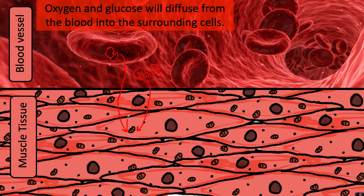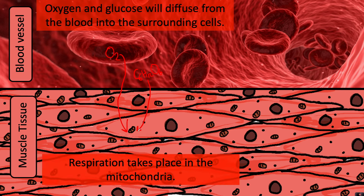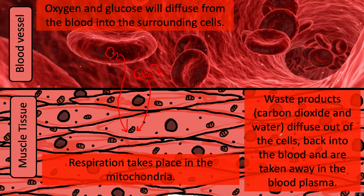The oxygen and glucose are directed to the mitochondria in the muscle cells, because respiration takes place in the mitochondria. There, oxygen and glucose react together to make carbon dioxide and water, releasing energy. The waste products — carbon dioxide and water — then diffuse out of the cells back into the blood and are taken away in the blood plasma.